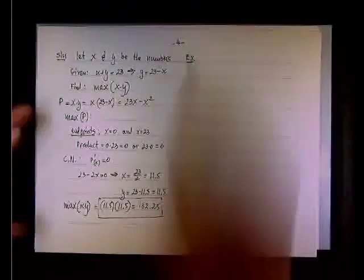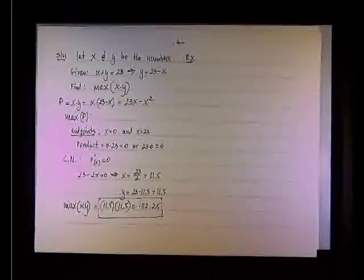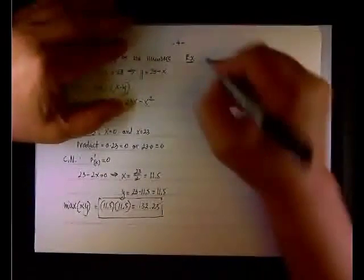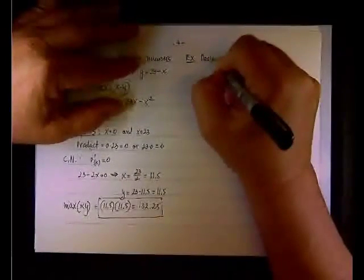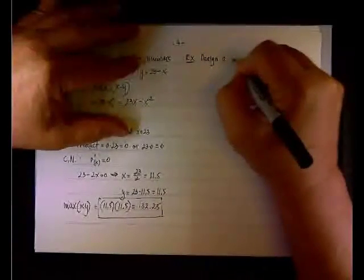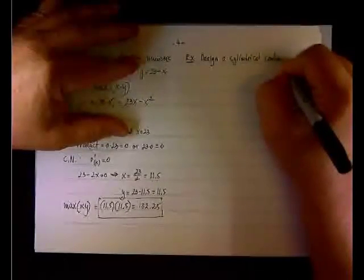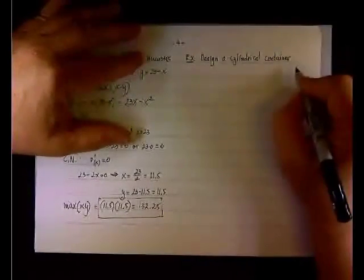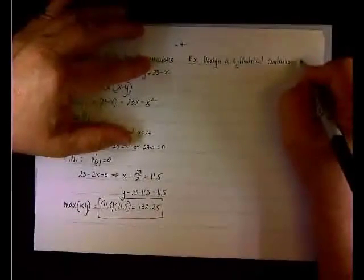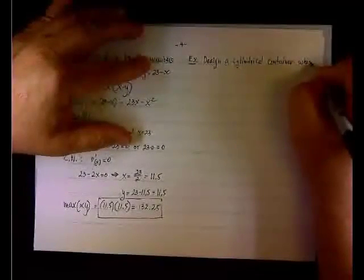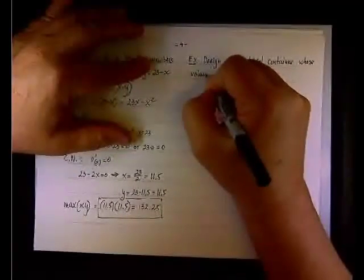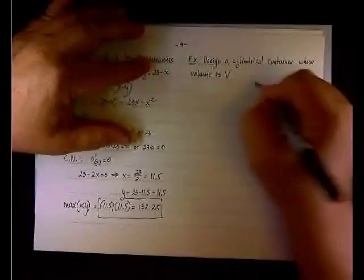The following example where I started with, we want to design a cylindrical container whose volume is given that minimize the surface area, minimize the cost. So design a cylindrical container whose volume is V. This is given.